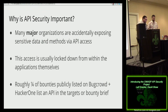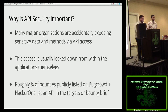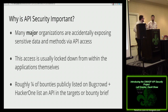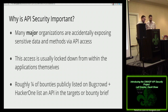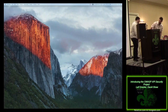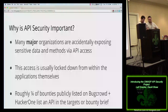Major organizations are basically accidentally exposing sensitive data and methods via API access — not meaning to, but saying 'everyone's releasing these APIs, we should too,' or having a legitimate use case but not putting the same security controls or thought into the dev process as for formal applications. Roughly a quarter of the bounties on Bugcrowd and HackerOne include APIs in their scope, and that's only things specifically called out. The United Airlines thing wasn't explicitly saying 'test our API,' but they had a mobile app in scope that was making API calls on the back end.